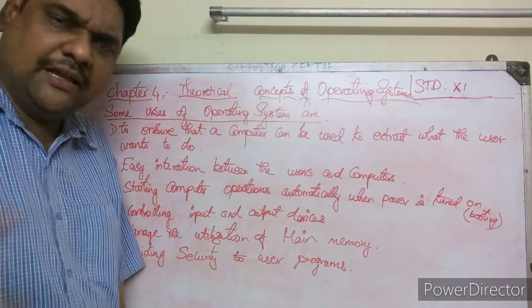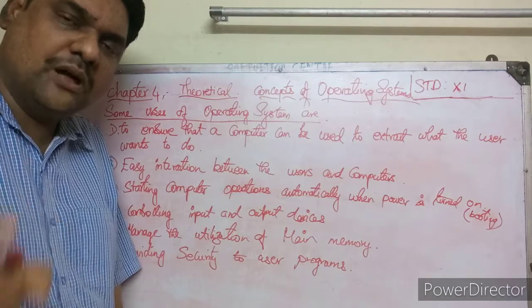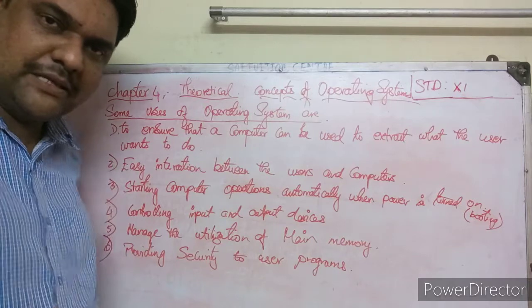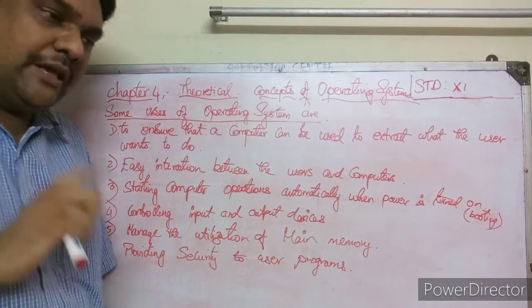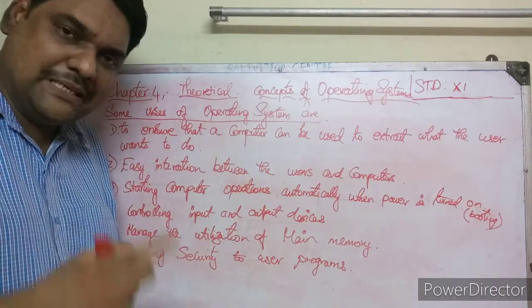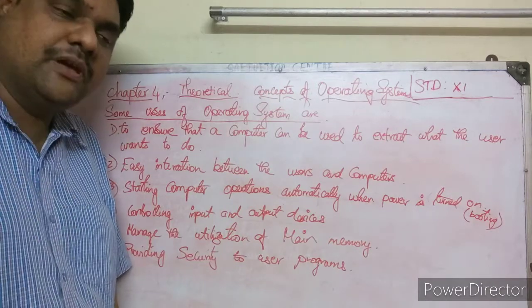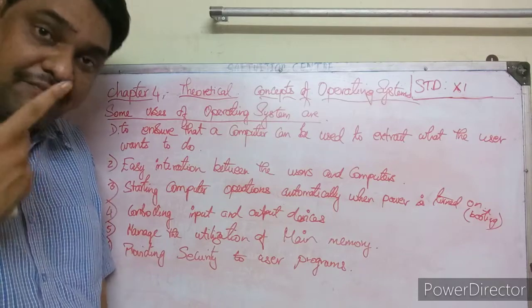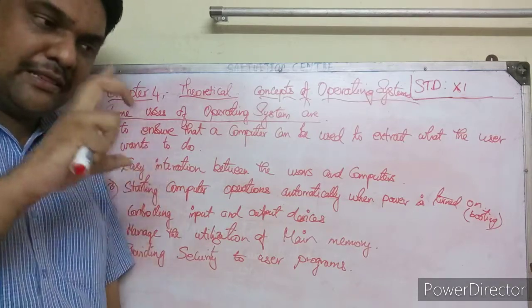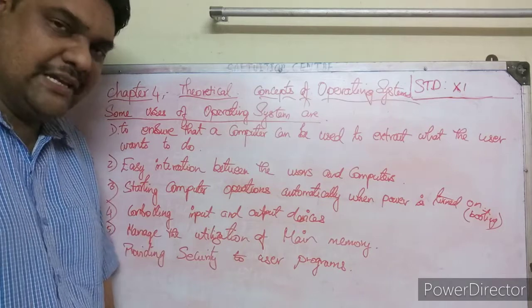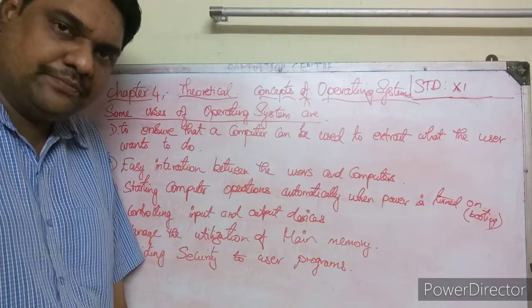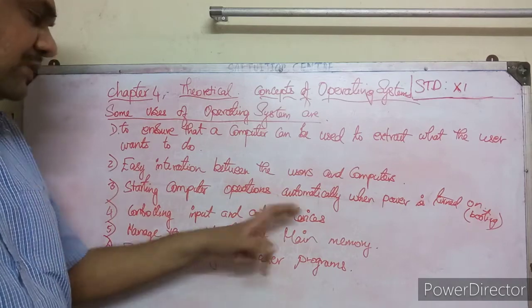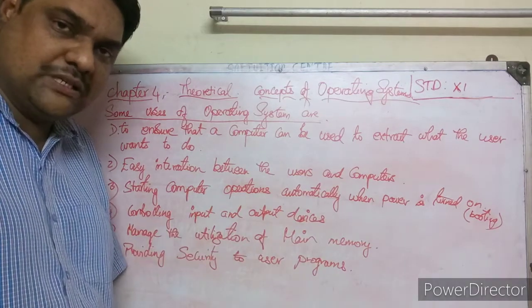Input and output devices are connected to and interact with the operating system, not the application directly. The operating system controls these devices and manages the messages sent to the screen. That is the operating system's role in handling input and output.